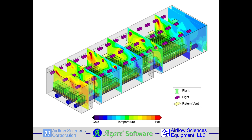The ventilation system for this grow room consisted of three fabric ducts that ran underneath the tables that hold the plants, along with return vents in the ceiling. The model included the heat sources of the lights and outside walls, as well as the added humidity resulting from the plants.